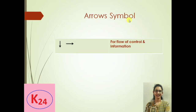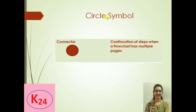The next symbol is the arrow, which is used for the flow of control and information. The last symbol is the circle, used as a connector for the continuation of steps when a flowchart spans multiple pages. These are the basic symbols of a flowchart.